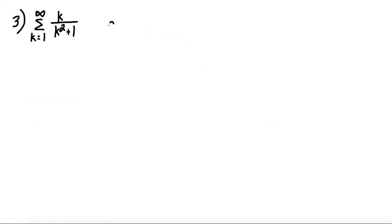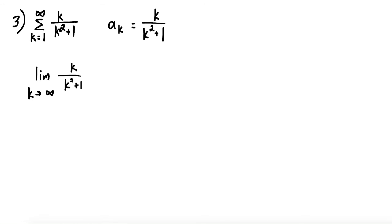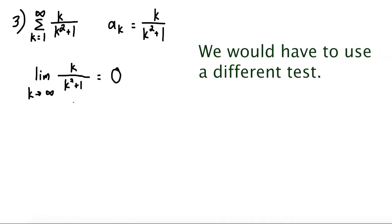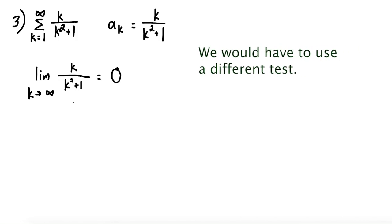For the third question, a sub k is equal to k over k squared plus 1. If we take the limit as k goes to infinity of k over k squared plus 1, this is a rational function where the degree of the denominator is higher than the degree of the numerator. Since the denominator has a higher leading term of degree 2 versus degree 1, the limit goes to 0. If the limit is equal to 0, the divergence test is inconclusive — the series could either converge or diverge, but we cannot determine this by the divergence test.